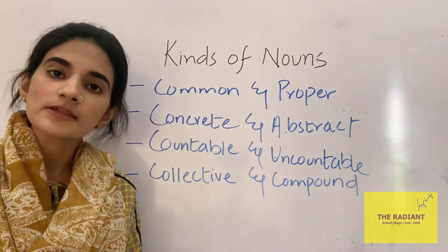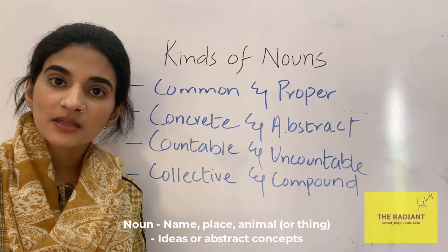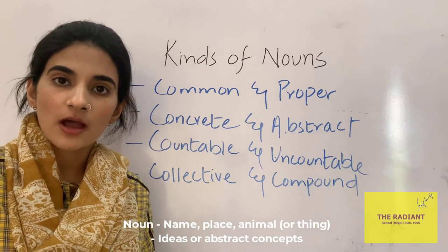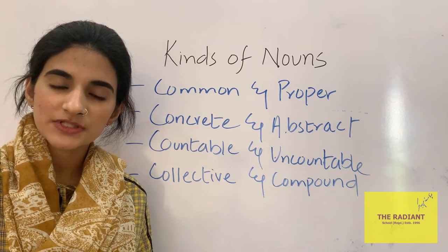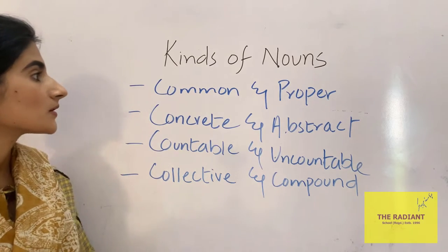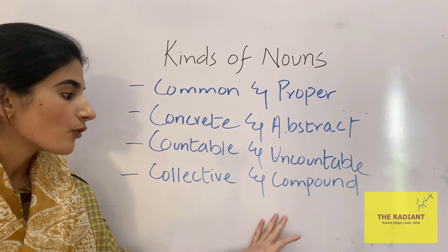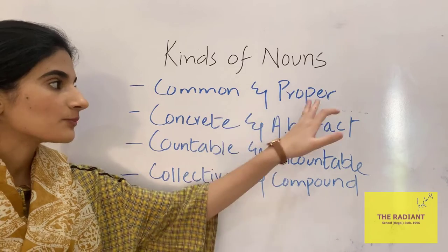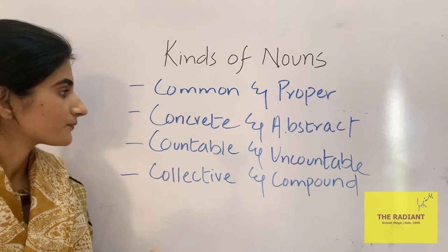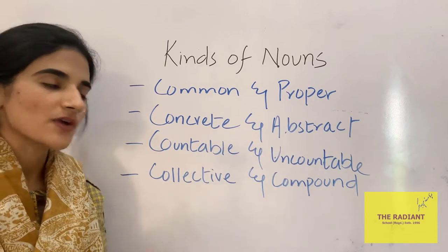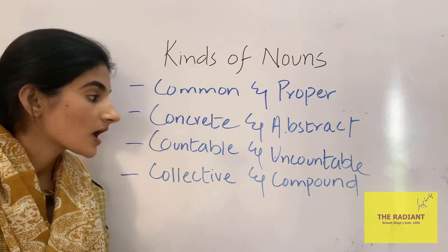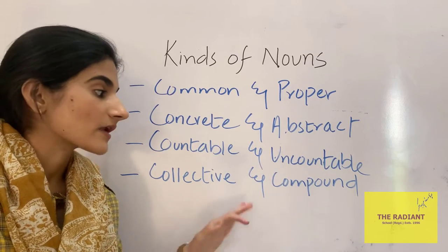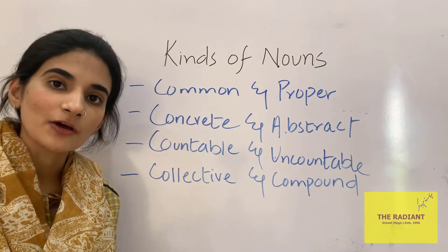A noun is a name, place, animal or thing, as well as ideas or abstract concepts. I'll talk about four classes of nouns: common and proper, concrete and abstract, countable and uncountable, as well as collective and compound nouns.